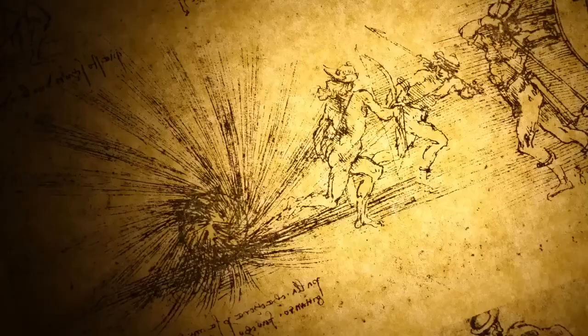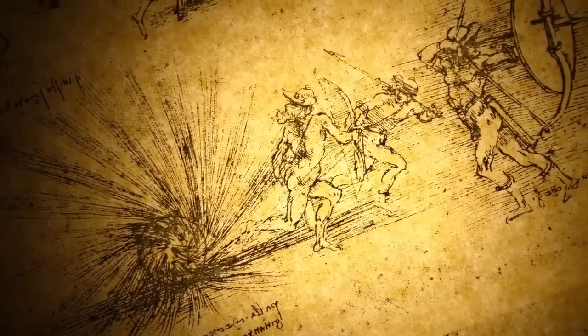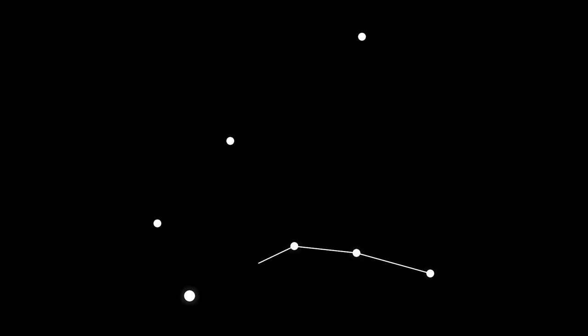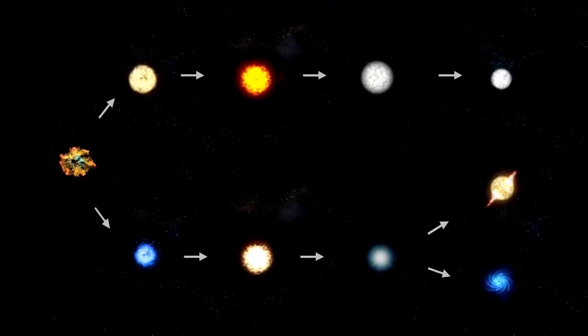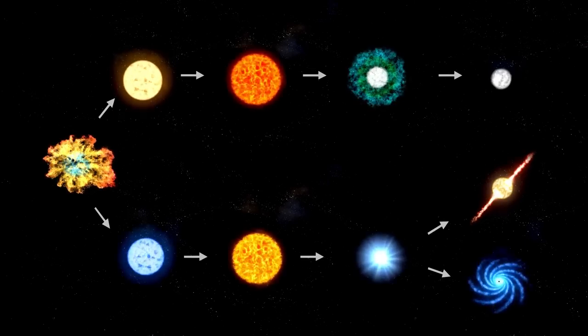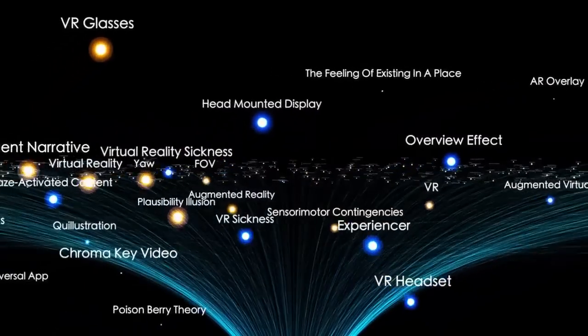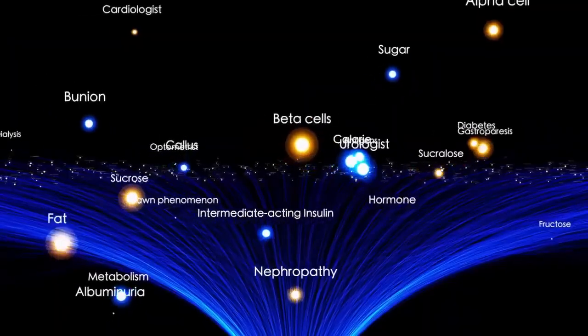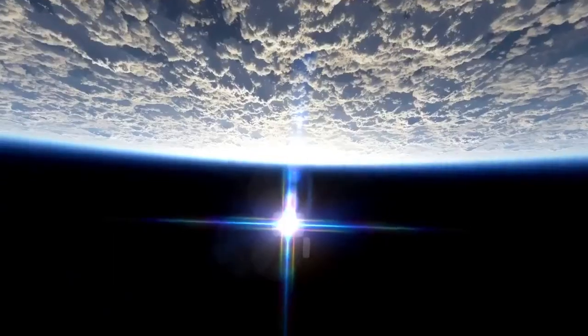The surprising thing is that Betelgeuse is not as unique as one might think. While there are not many stars like it, there are some that share certain similarities and are equally fascinating. One of Betelgeuse's cosmic cousins is Antares, a red supergiant located in the constellation Scorpius. Antares is also a variable star, meaning that it undergoes changes in brightness over time, just like Betelgeuse. In addition, Antares has a mass approximately 12 times that of the sun, and a radius that is 700 times that of the sun. So, it's safe to say that Antares is no slouch in terms of size.